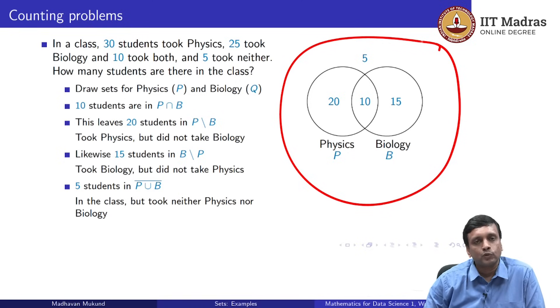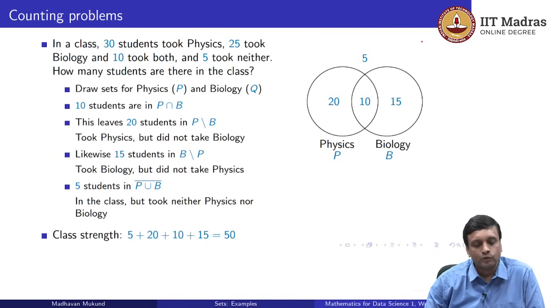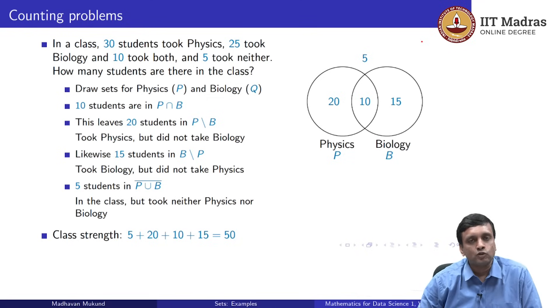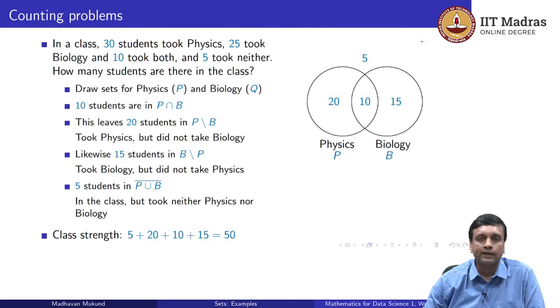Now, if we add up the students across these, we get the exact number of students. And in this case, it is 5 plus 20 plus 10 plus 15, which is 50. So, there are actually 55 students taking physics and biology together, but the total class strength is only 50. And actually, only 45 students are taking these subjects, because 5 are not taking either of them.